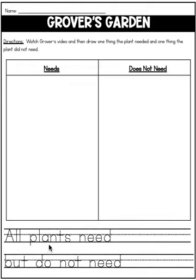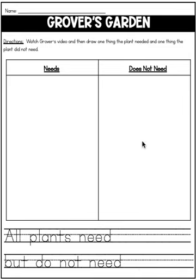Now you're going to fill in the sentence. It says: 'All plants need blank.' Based on the Grover video, what did his plant need? Write it here. Then it says 'but do not need,' so all plants need blank — something here — but do not need — and put your answer here. What did you draw in this box? Sound it out and write it on the line here.